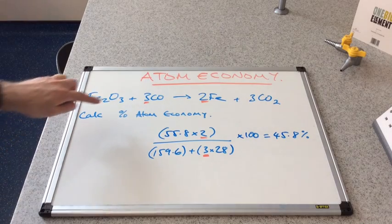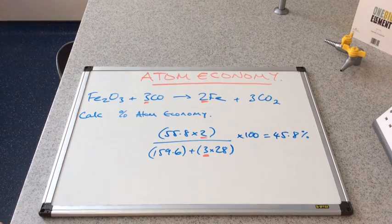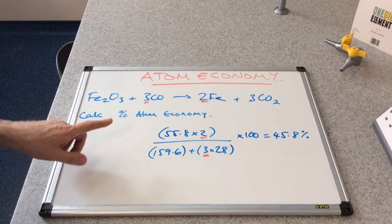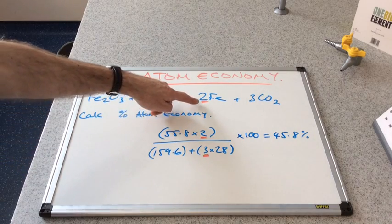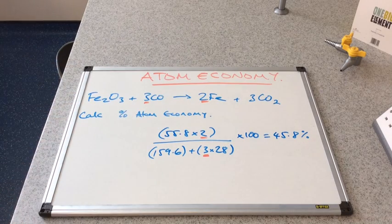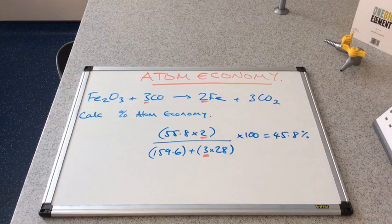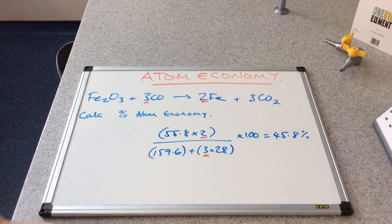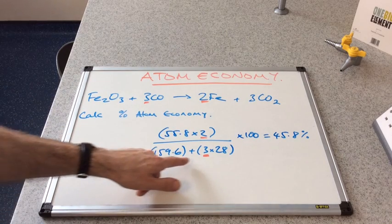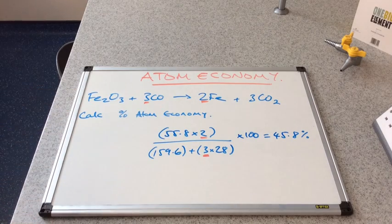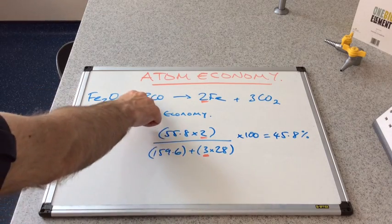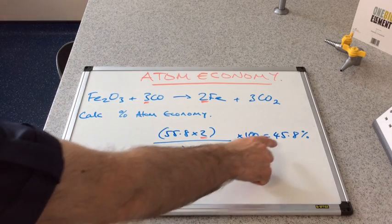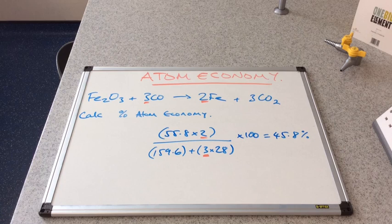So I'll just talk you through the calculation here. I've underlined the 3 and the 2 there, because that's got to be brought into play in the calculation. So remember the way to calculate atom economy is the MR of the desired product. So we want to make the iron, but because there's a 2 in front in the equation, it's 55.8 times 2, all over the sum of the MRs of all the reactants. But remember there's a 3 in front of the carbon monoxide, so we have to factor that in there. And that comes out as an atom economy of 45.8%.